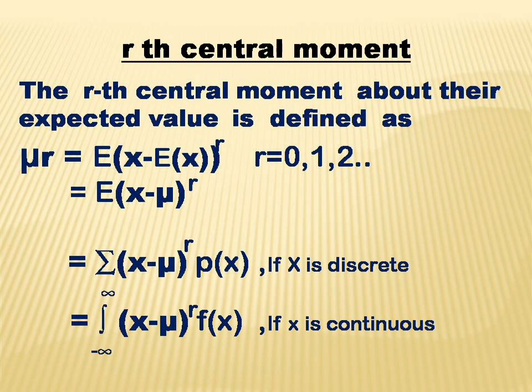In the r-th central moment, E of X is mu of X. The formula involves the summation of (x minus mu) raised to r, times p of x.